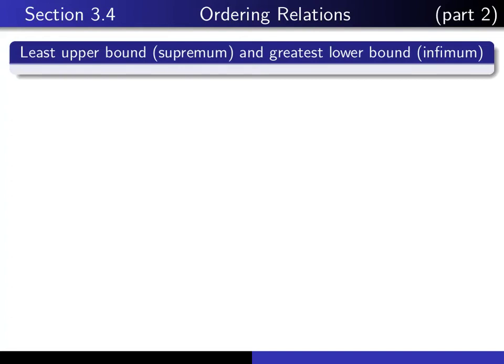This is part 2 in our series of lectures on section 3.4, dealing with ordering relations. In this lecture, we're going to talk about least upper bound and greatest lower bound relative to a given partial order.